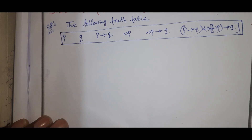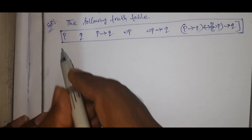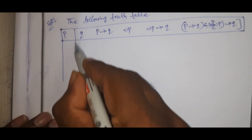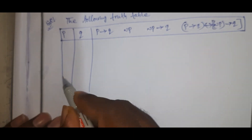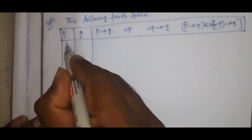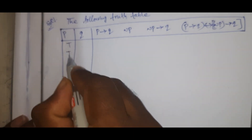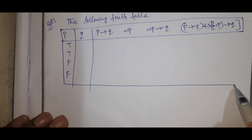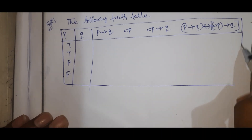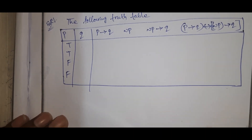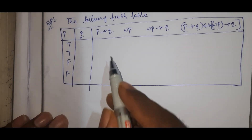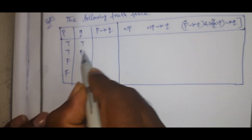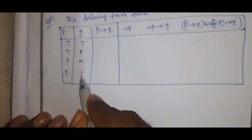This is the truth table with two propositions P and Q. The following truth table columns are: P, Q, P conditional Q, negation P, negation P conditional Q, and P conditional Q biconditional negation P conditional Q. The P column is: true, true, false, false. The Q column is: true, false, true, false.